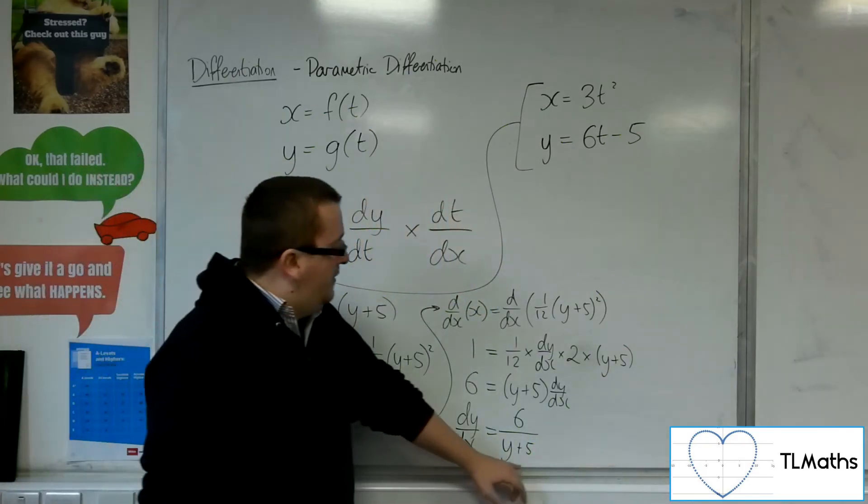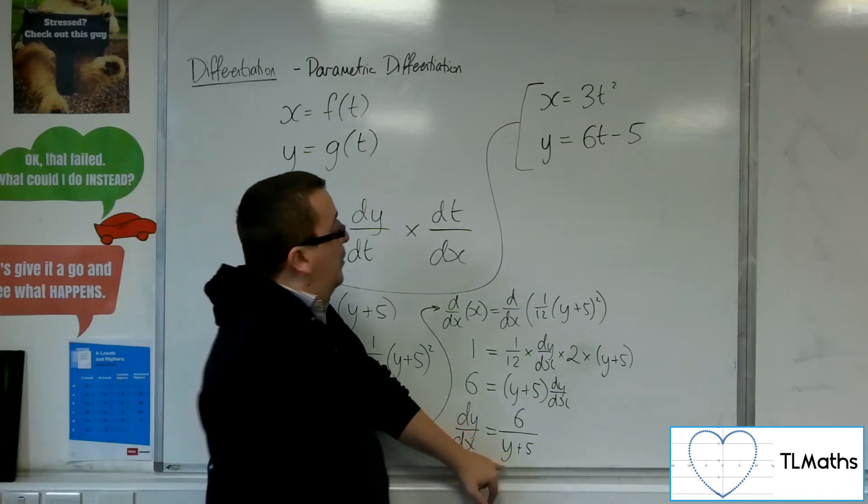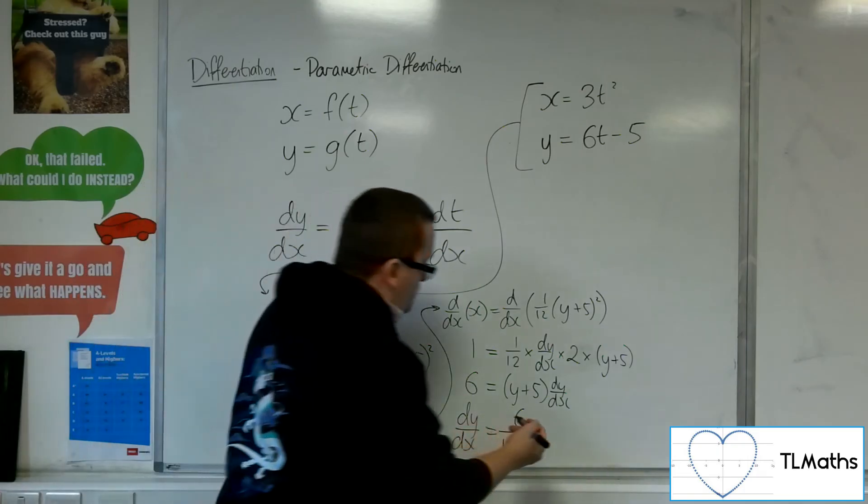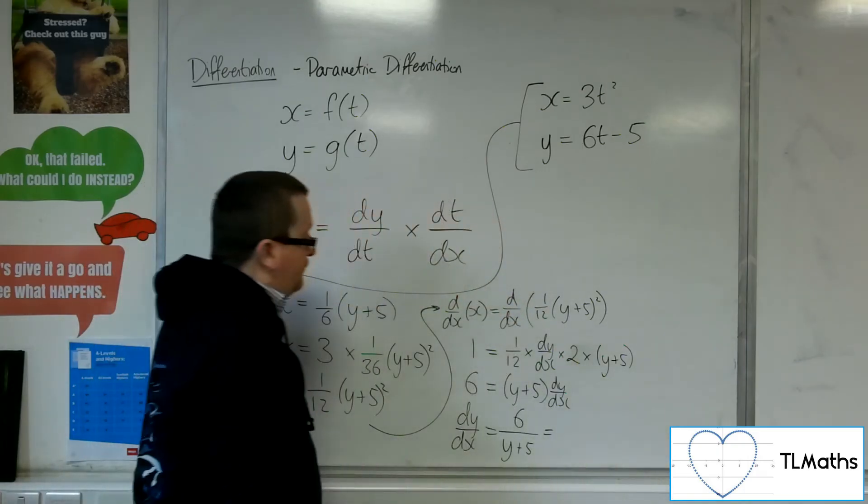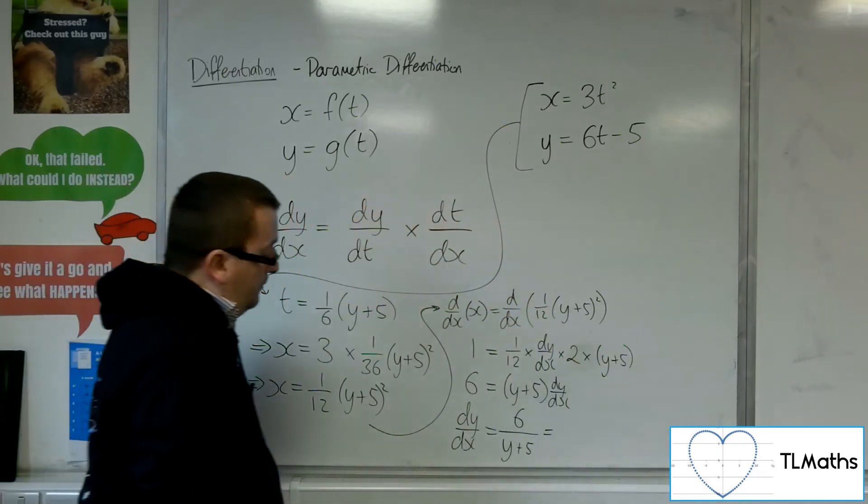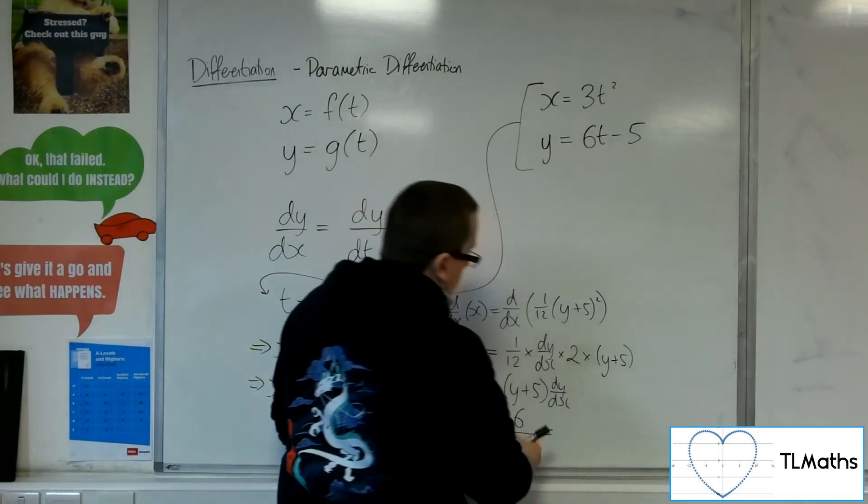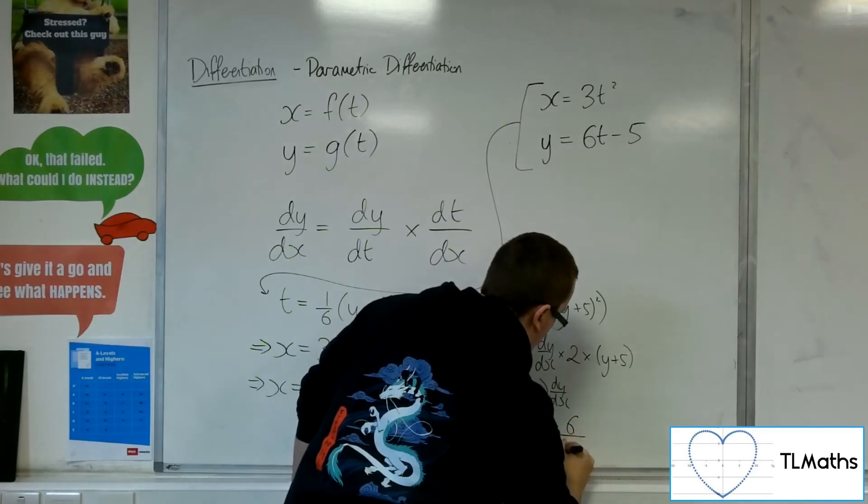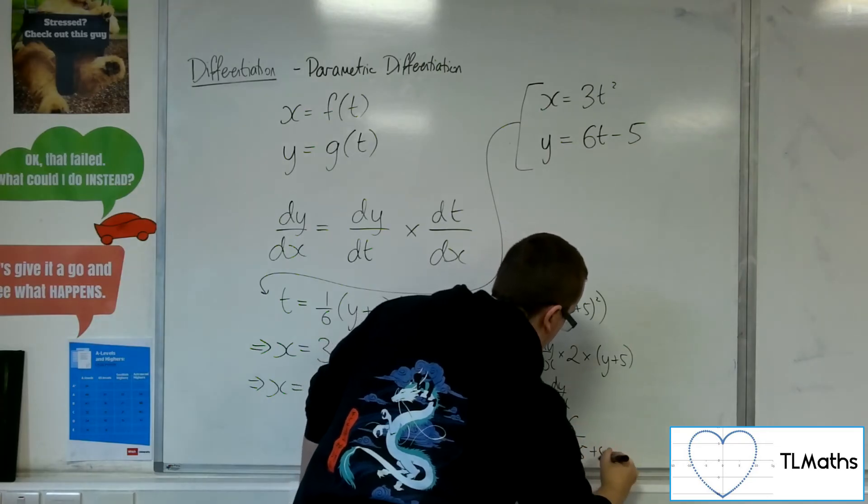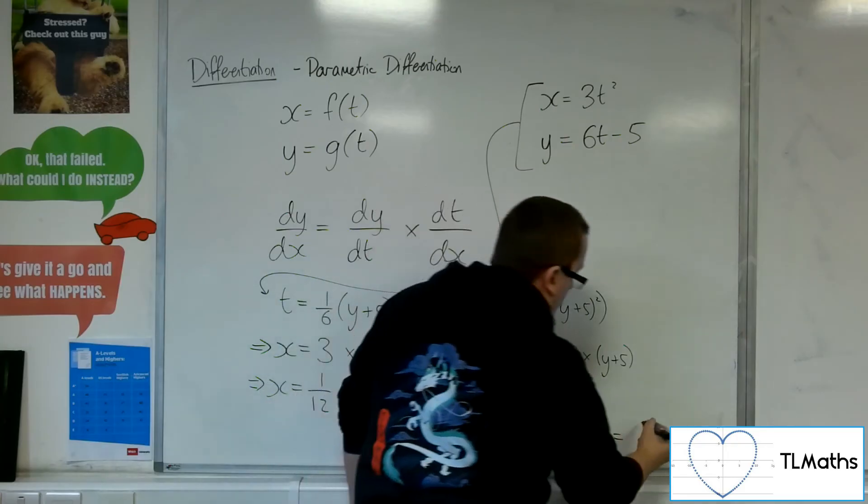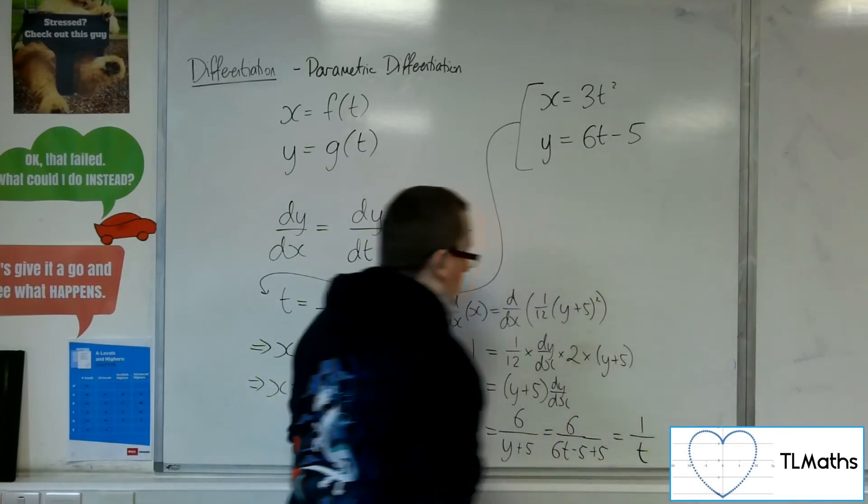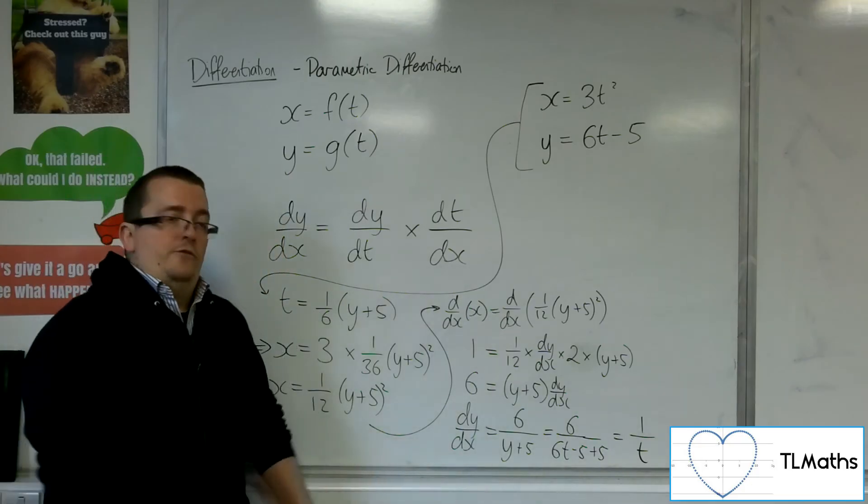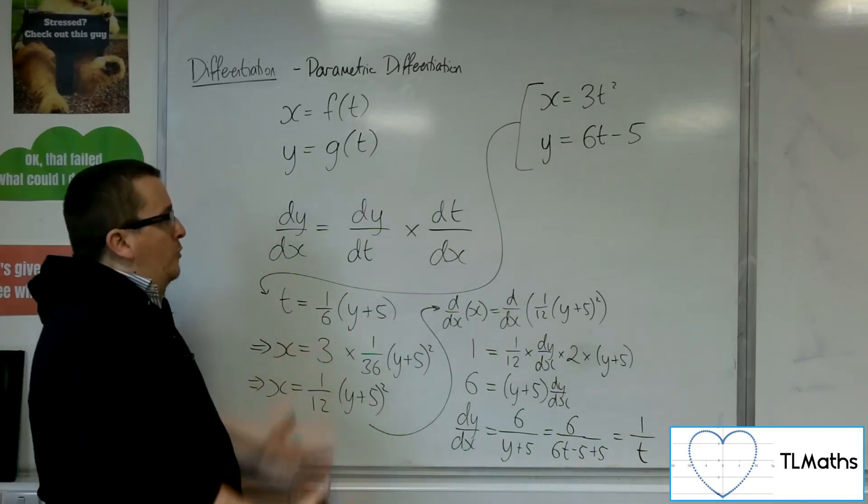Now, you could then write, put the y back in, and you could write it in terms of t, if you like, in terms of the parameter, which might be useful. So when y is put back in, that's 6t minus 5. The 5s cancel, the 6s cancel, and I'd get left with 1 over t. OK. So that would be the process from what we've already known, what we already know.